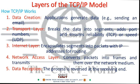How TCP/IP Works: 1. Data Creation — applications generate data, e.g., sending an email. 2. Transport Layer — breaks the data into segments, adds port numbers, and ensures reliability. 3. Internet Layer — encapsulates segments into packets with IP addresses for routing. 4. Network Access Layer — converts packets into frames and transmits them over the network medium. 5. Data Reception — the process is reversed at the receiving end.